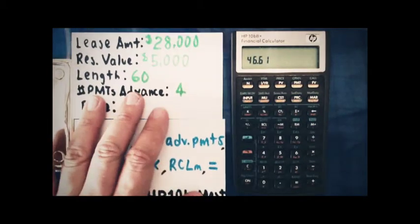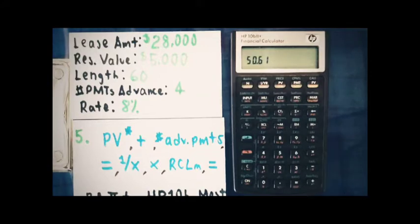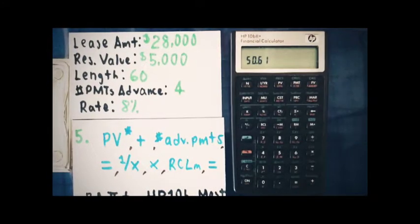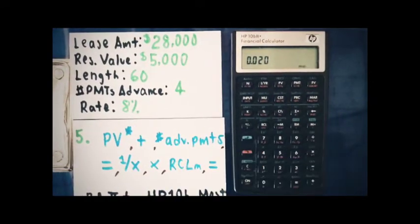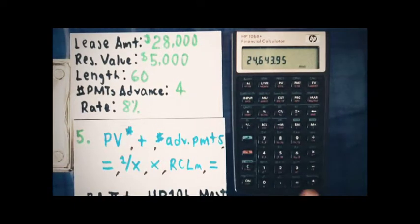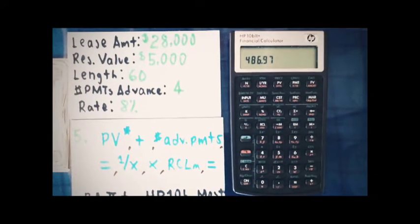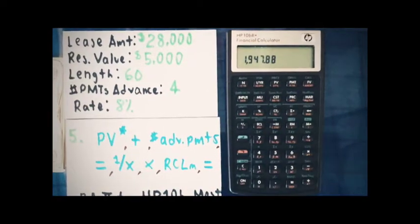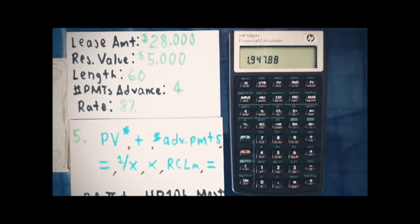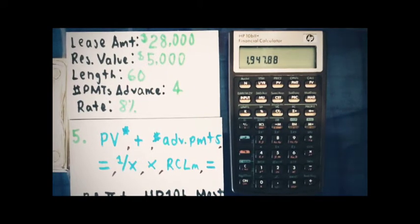We go to step 5: add the number of payments in advance, which is 4, and hit the equal sign — giving us 50.61. Then do the reciprocal, which on this calculator is the orange shift division key, and hit the multiplication key. Recall memory 0, hit equals, and we get a lease payment of $486.97 per month. The advance payment is going to be four times that, or $1,947.88. And that is how you deal with leases that require some payments in advance.